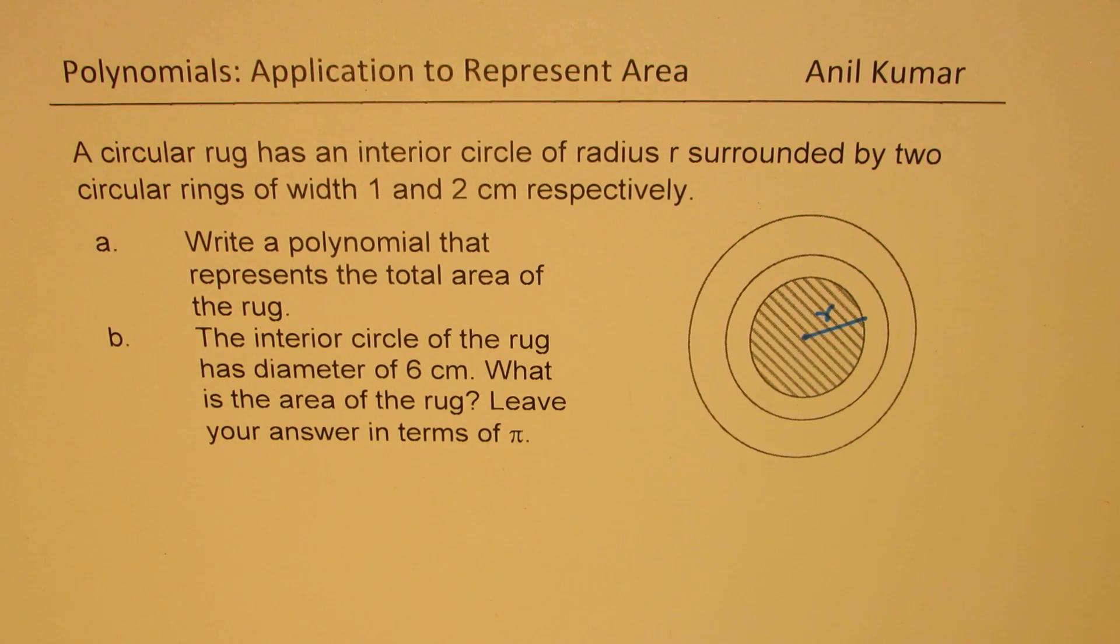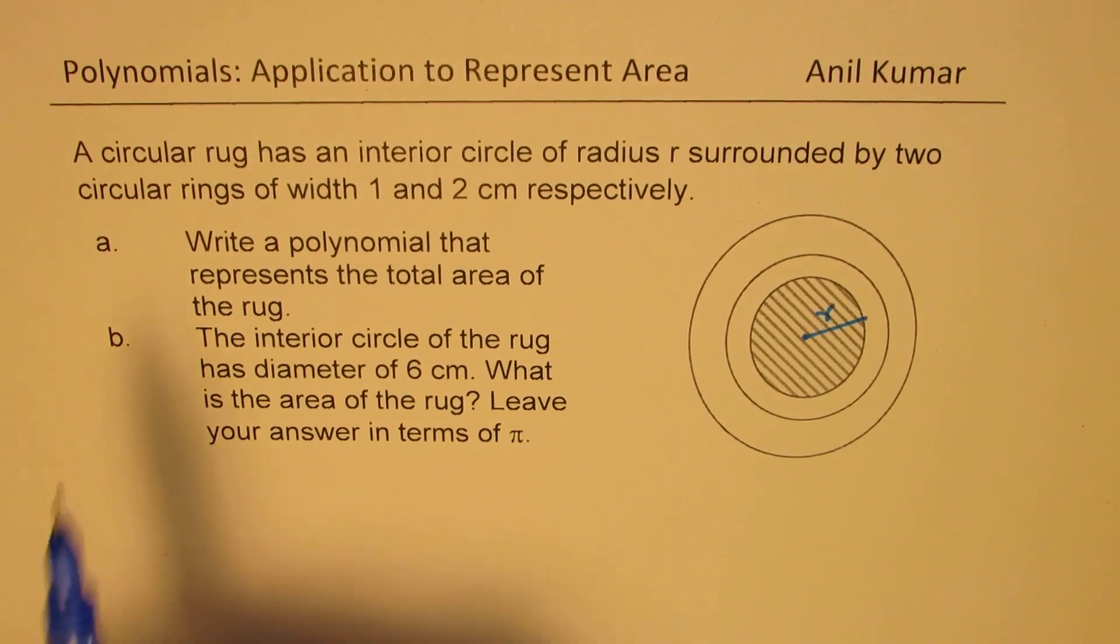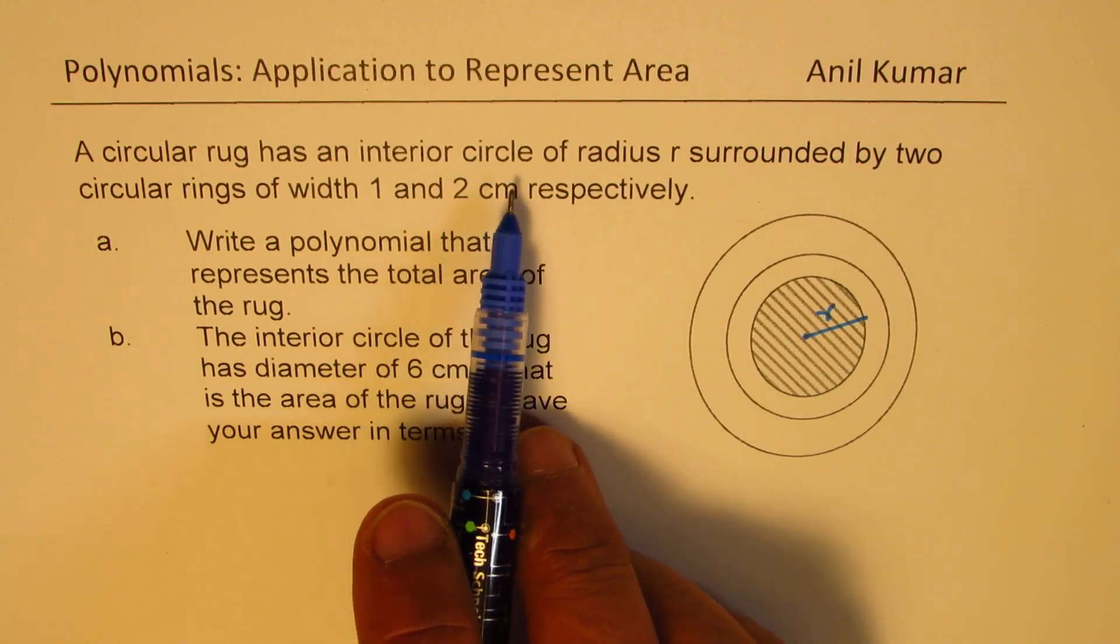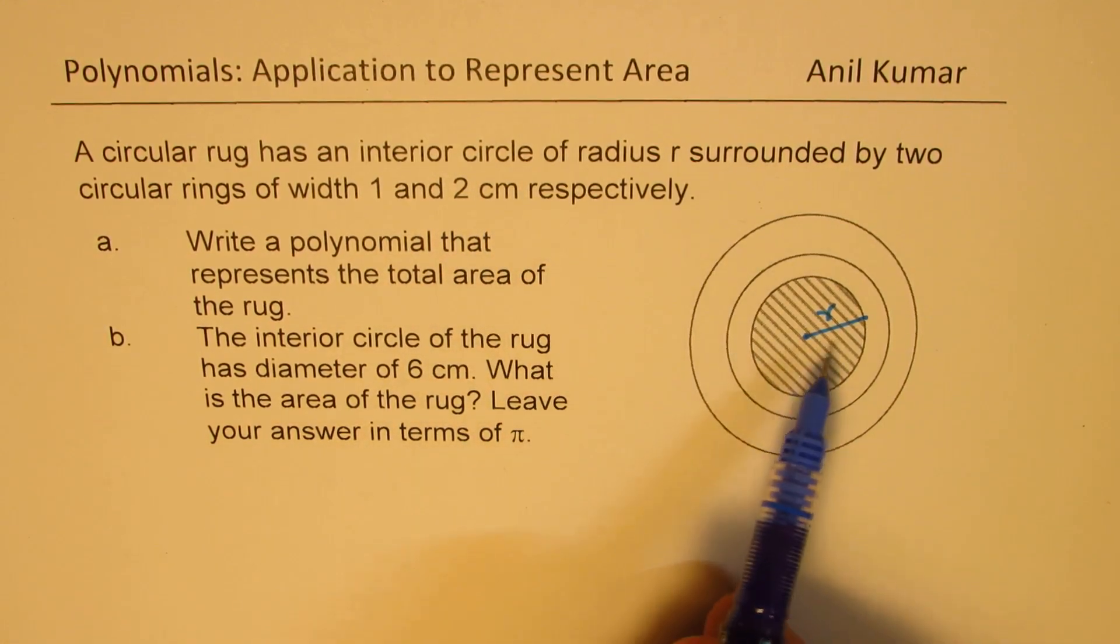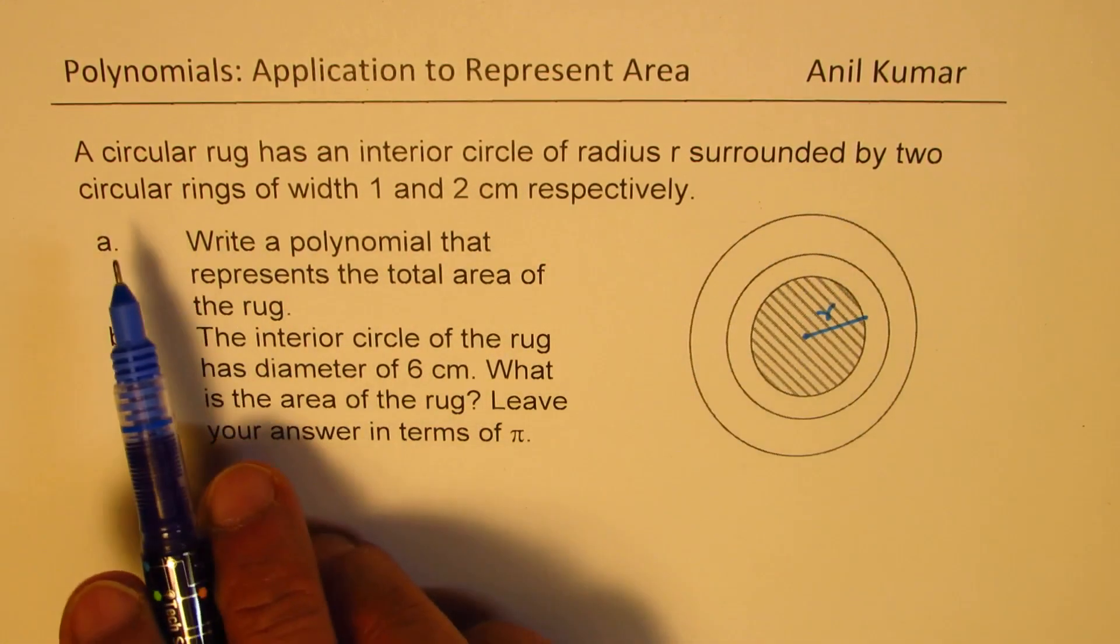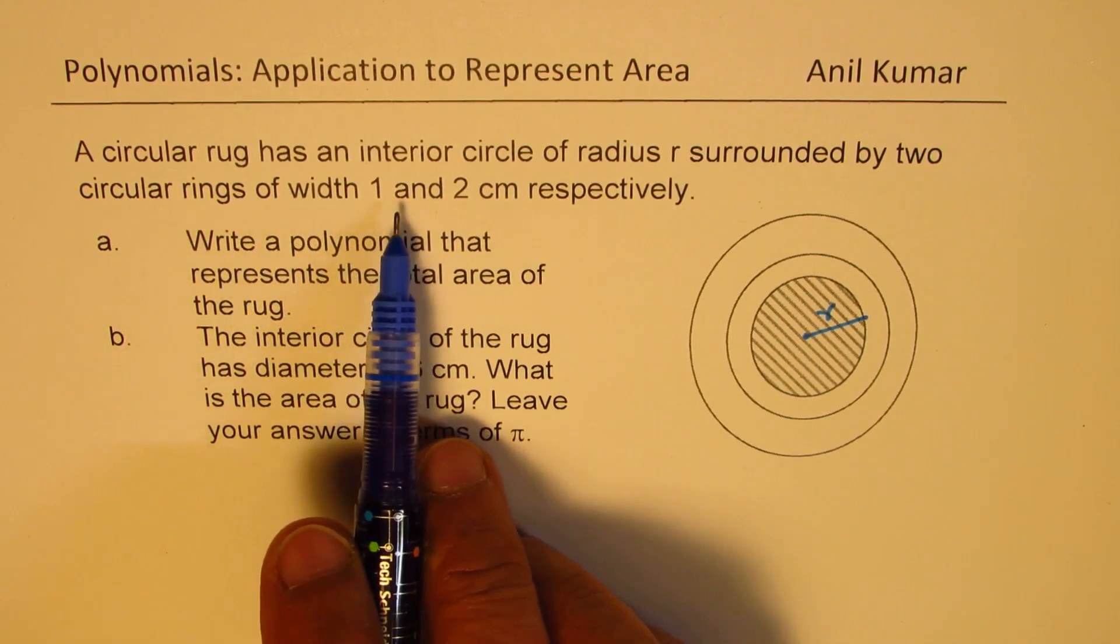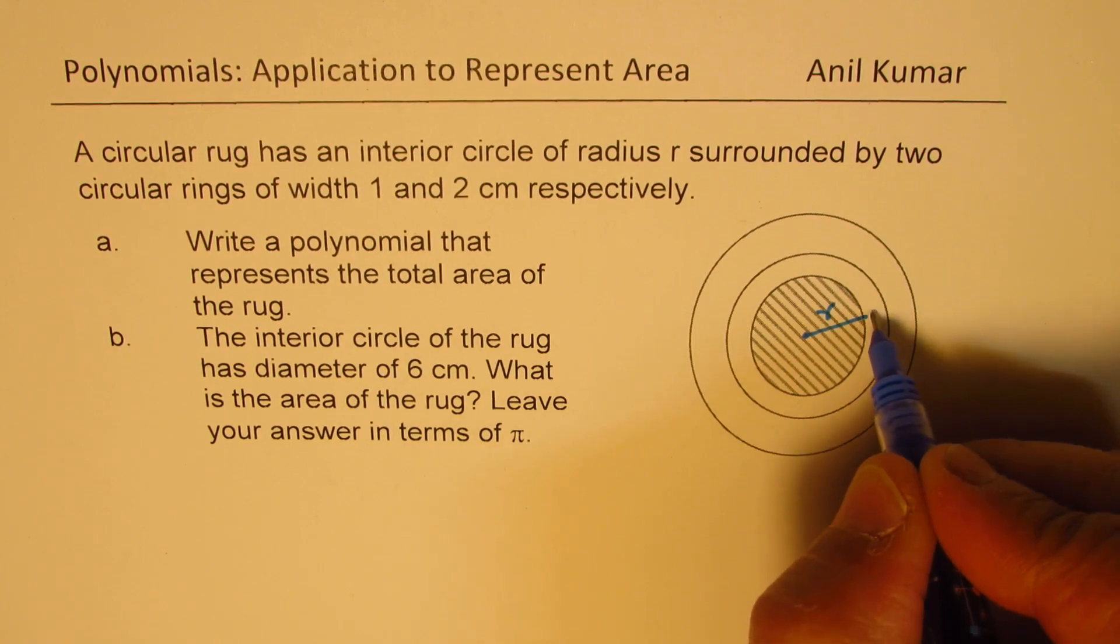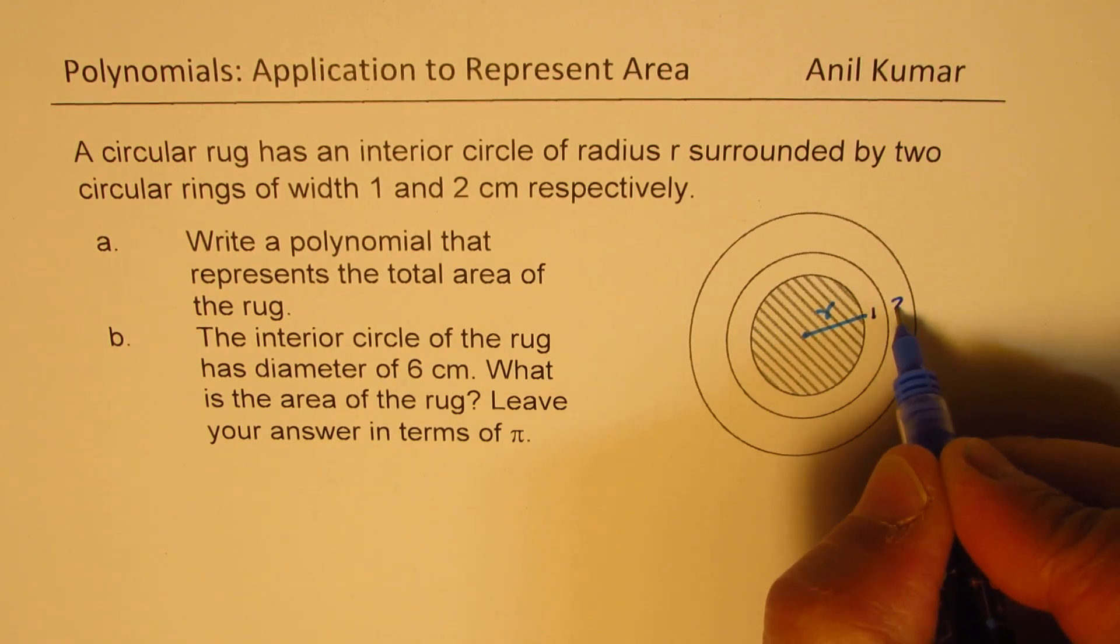They're all based on applications to represent area in the form of polynomials. The question here is: a circular rug has an interior circle of radius r surrounded by two circular rings of width 1 and 2 cm respectively. So let us say this one is width 1, that one is width 2.